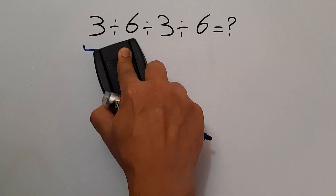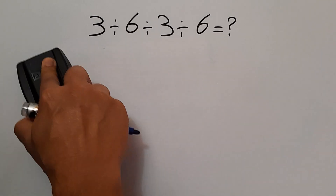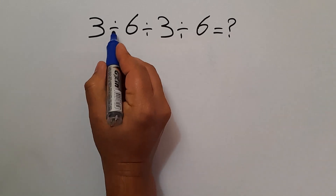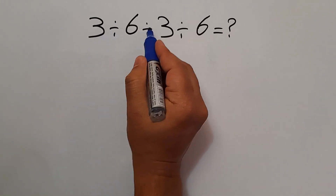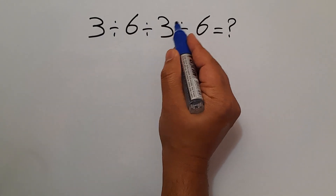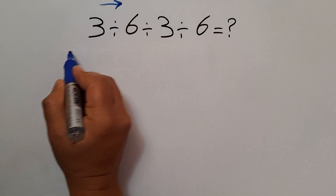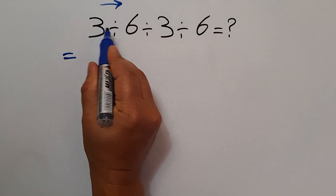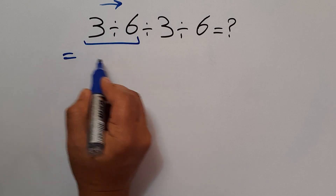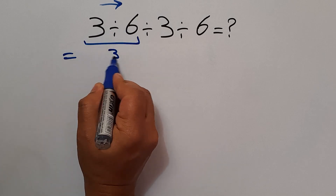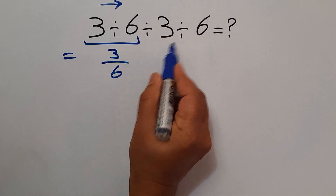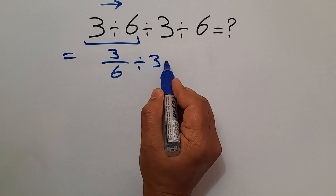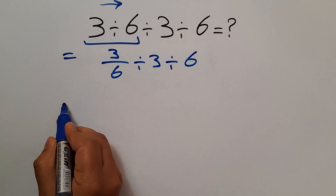According to the order of operations we have to work from left to right. So first this division, then this division, and finally this division. Our expression equals 3 divided by 6, which can be written as 3 over 6, and then divided by 3, and divided by 6.